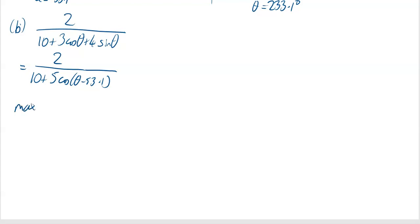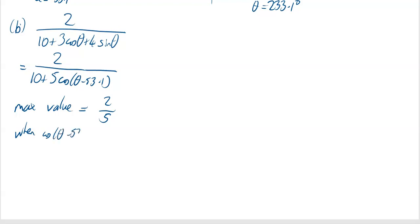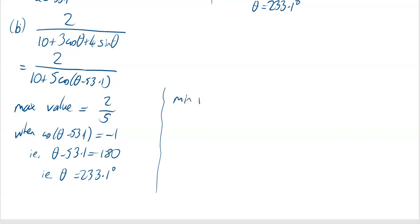The maximum value of a fraction is maximum whenever the denominator is minimum. The smallest the denominator can be is 10 + 5 × (-1) = 10 - 5 = 5, so the maximum value is 2/5. That happens when cos(θ - 53.1°) = -1, i.e. θ - 53.1° = 180°, so θ = 233.1°.